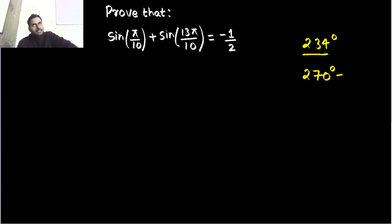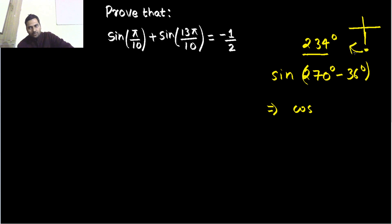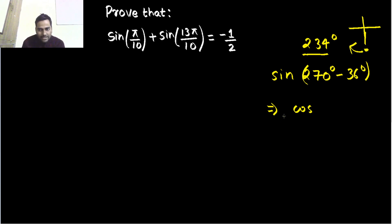If I use 270 minus, I will need 6 to make it 40 and 36, so this is sin(270 − 36°) inside sine. Now whenever you encounter 270, you change the name: sin goes to cos. And since 270 minus 36 lies in the third quadrant — where only tan is positive — cos will be negative. So we get minus cos(36°).